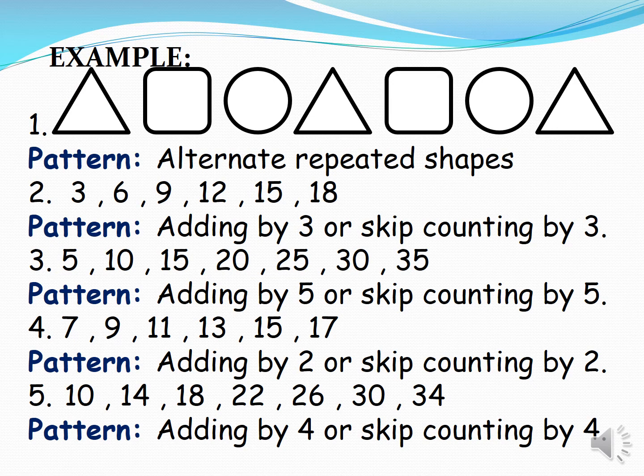Example number 1. We have three shapes: Triangle, Square, Circle, Triangle, Square, Circle, Triangle. So our pattern is alternate repeated shapes.